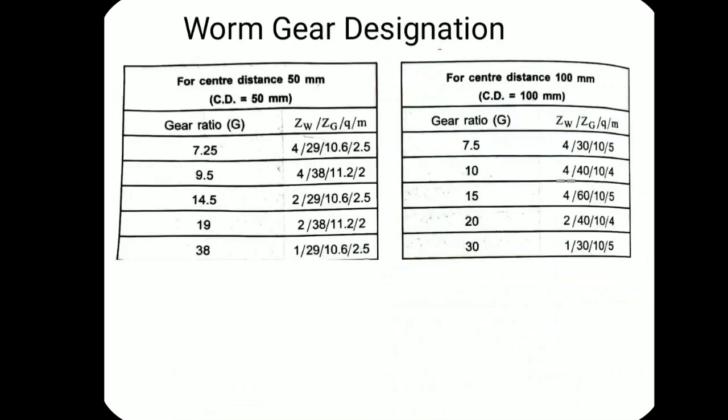Now the designation of worm gear is very important. The worm gear is designated by four digits: zw / zg / q / m. This means: zw is the number of starts on the worm, zg is the number of teeth on the gear, q is the diametral quotient (dw/m), and m is the module. This designation will always be given in the examination.